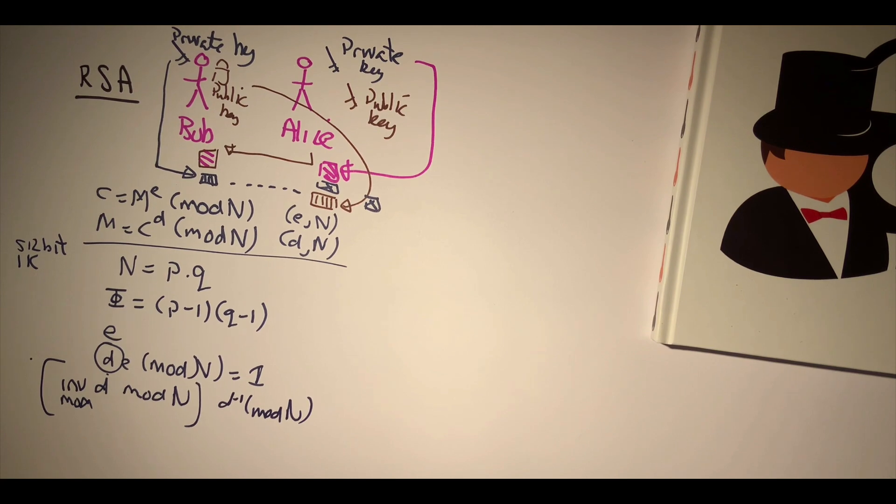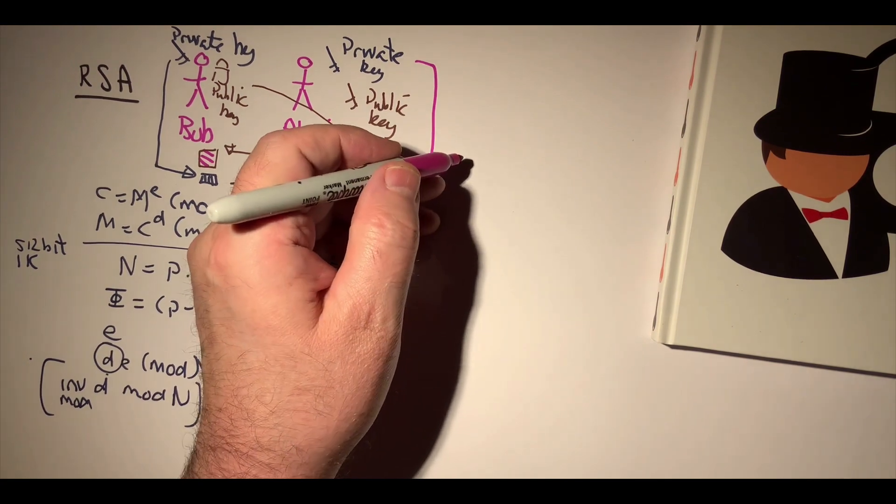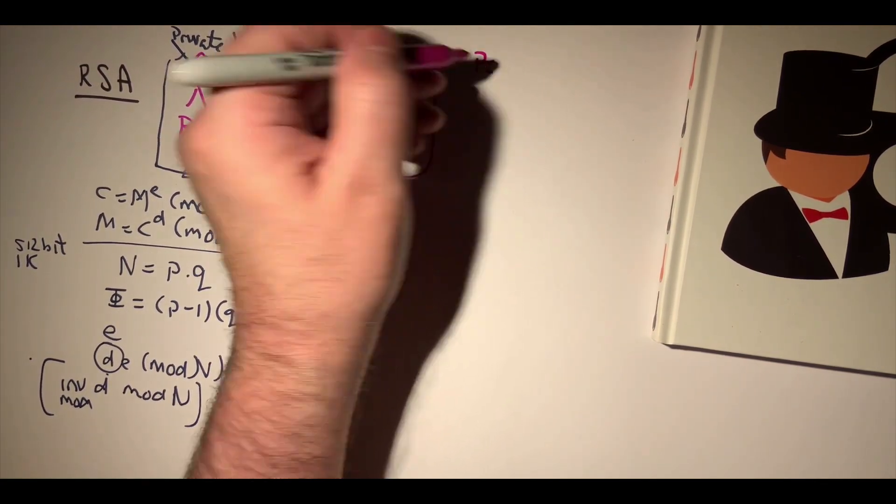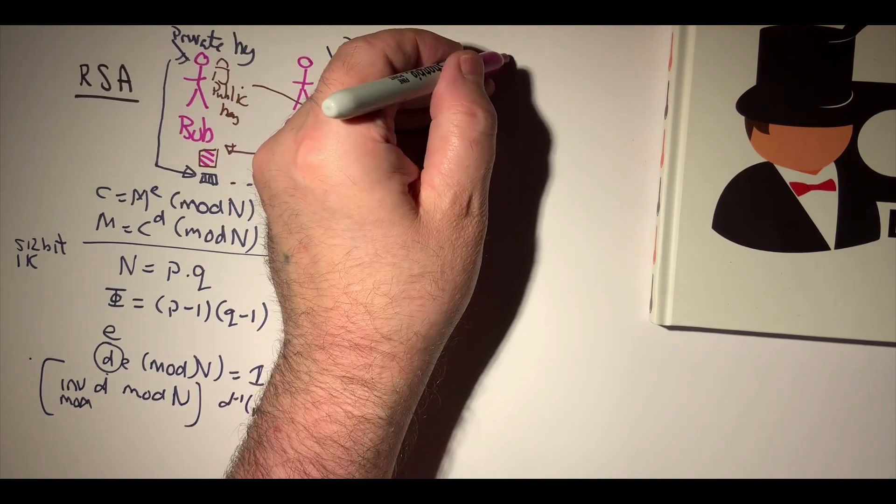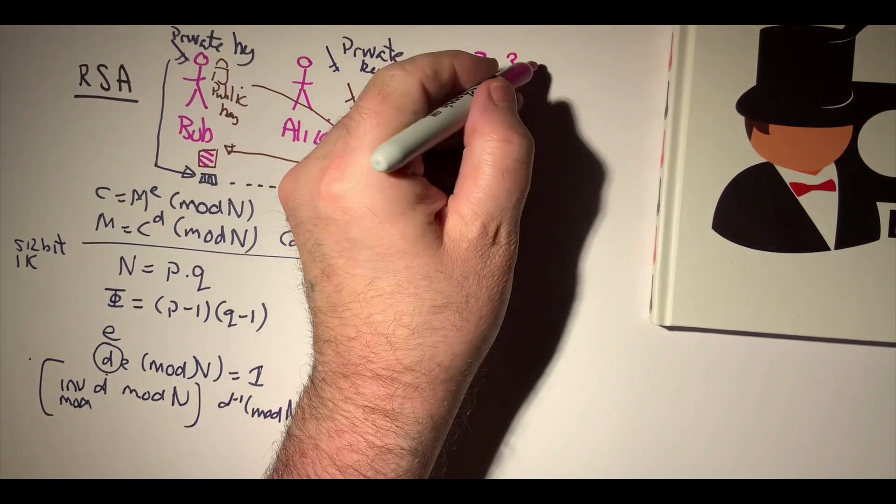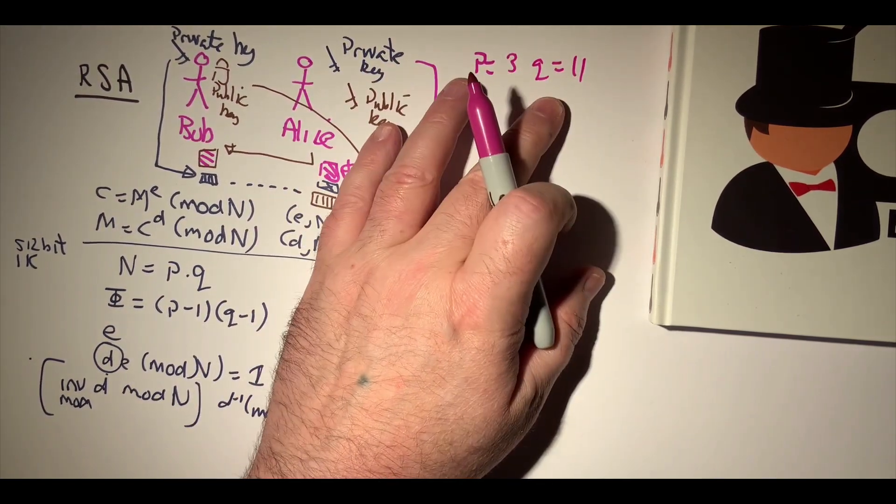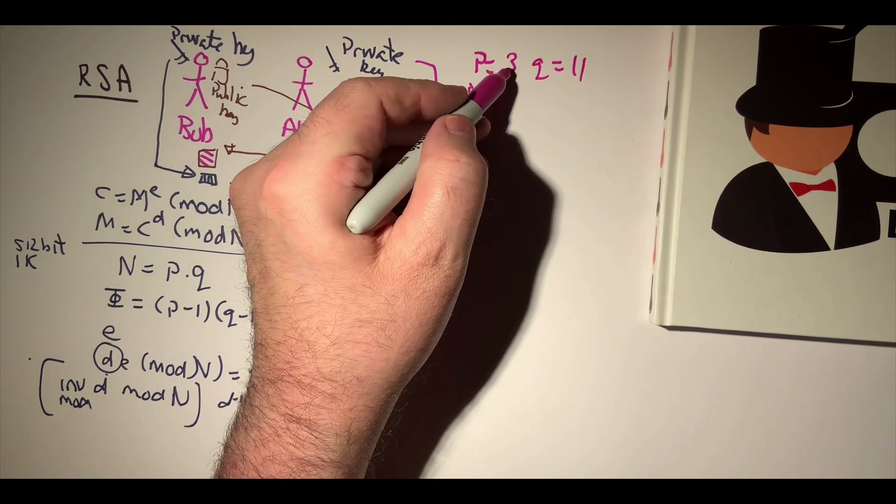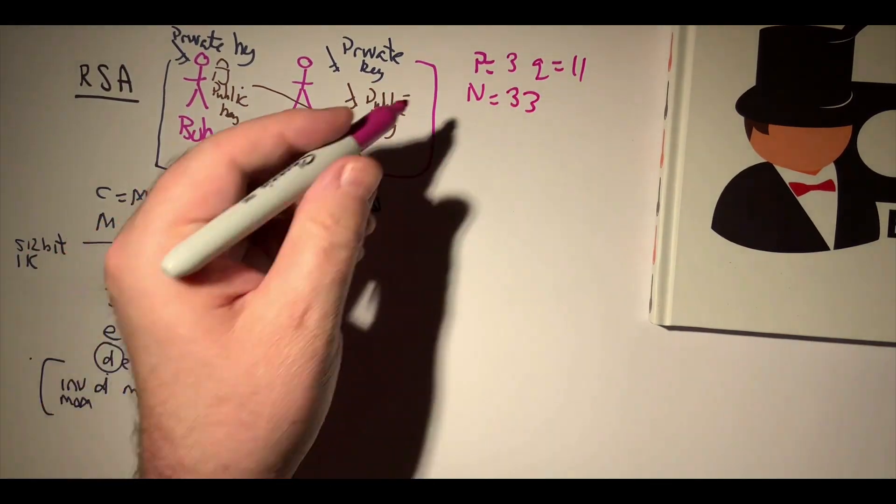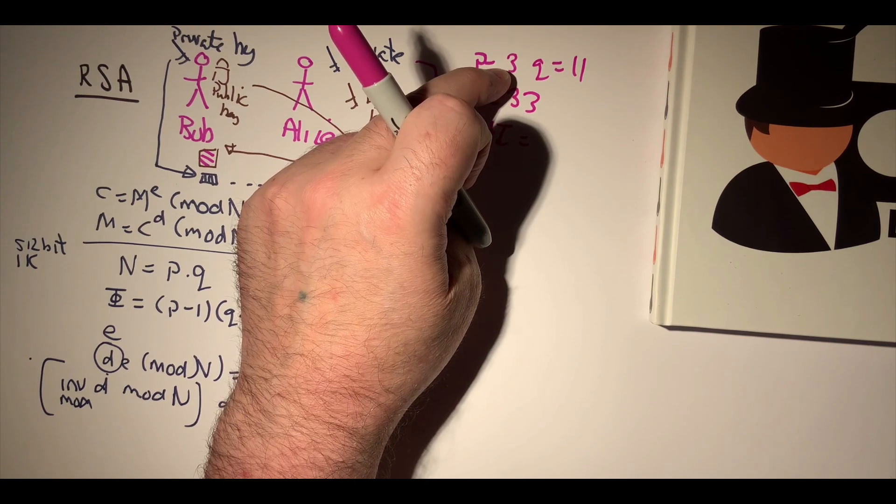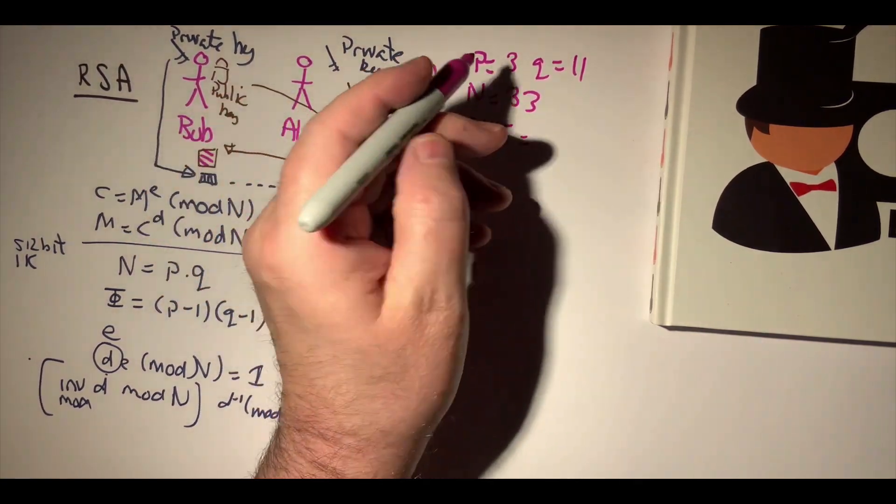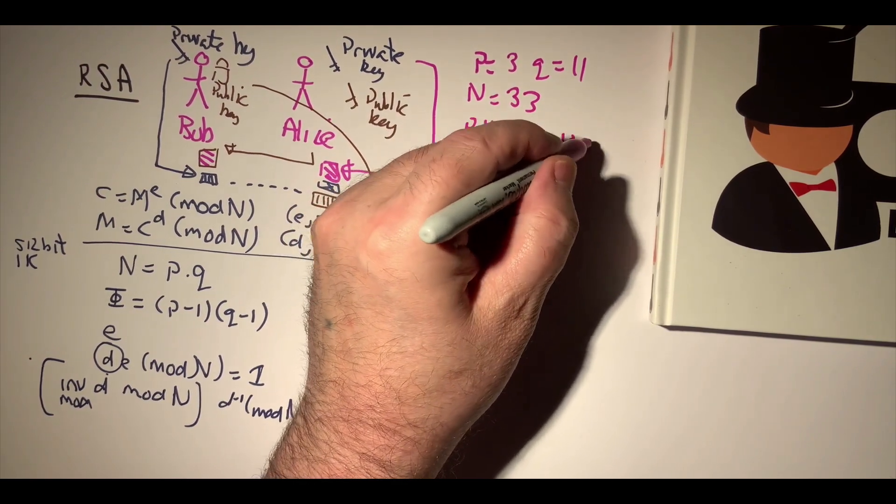So let's take a practical example and see how we can get this to work. Let's take a value of p equal to 3 and q equal to 11. So those are our two prime numbers. We will then calculate the modulus as 3 times 11, which is 33. First thing we will then do is calculate our phi value, so it's p minus 1, which is 2, times q minus 1, which is 10. So that will be 2 times 10, which is 20.